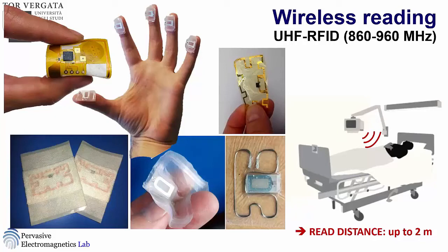In the non-collaborative case, you need a read distance of about a couple of meters. You have to move to higher frequency, close to one gigahertz, and the antennas are completely different. Here you can see some examples from my group — antennas made by copper, by tin wires, by inkjet printing, and so on.